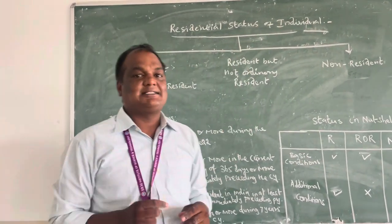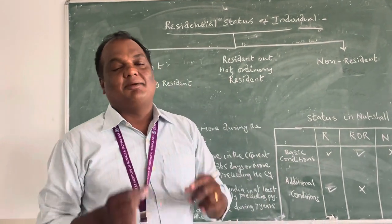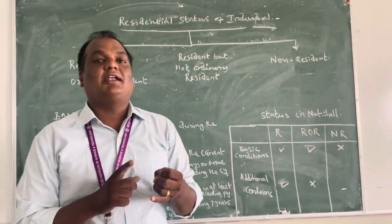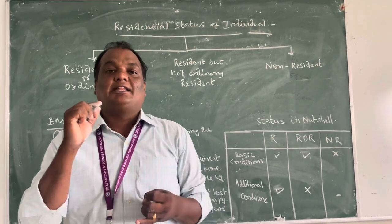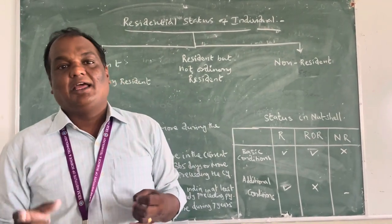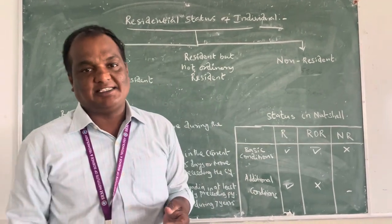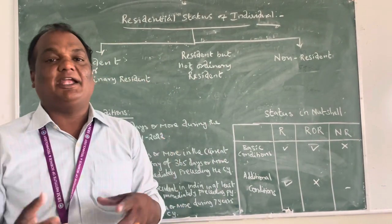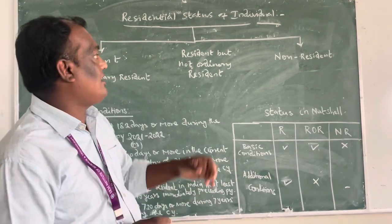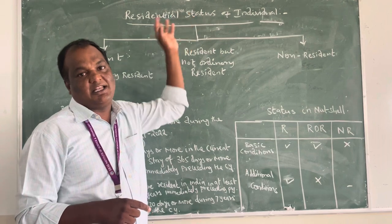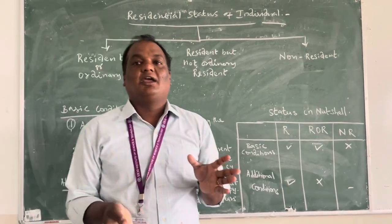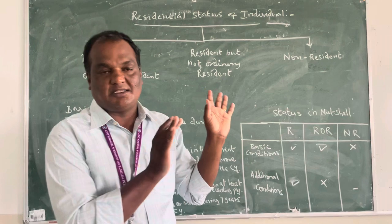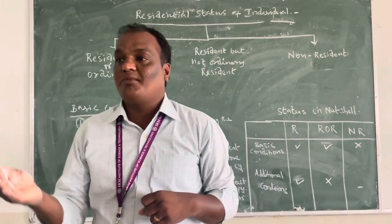Generally in India, the tax liability is to be determined based on the residential status. The residential status is the most important thing, and only then we can be able to compute the tax liability of an individual. Today we are following the progressive rate of tax system implemented by the government. According to the Income Tax Act 1961, the tax liability is to be determined based on the residential status. Students should know clearly about the residential status of an individual, then only you can be able to determine the tax liability.